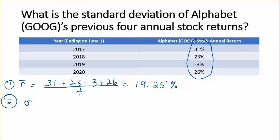Now the formula for variance, which is what we have to calculate before we can calculate standard deviation, is the return in each period. So I'm taking this return, 31%, and then subtract the mean that I just calculated, 19.25, and square it. Add the same deviation squared.